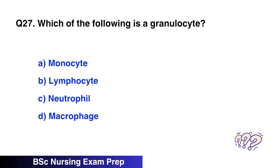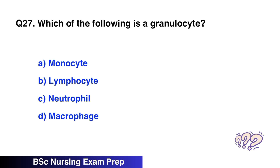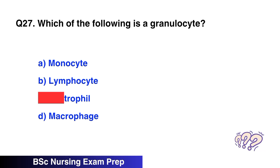Question 27. Which of the following is a granulocyte? The correct option is C, neutrophil.